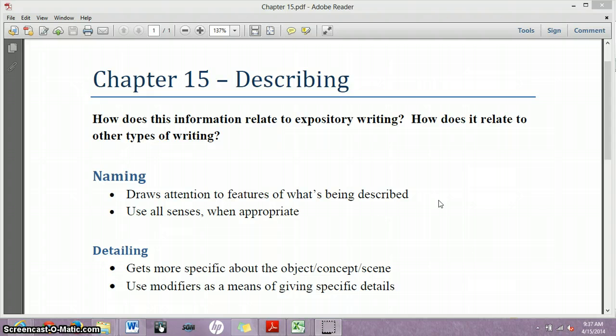So I think the strategies are pretty straightforward. With naming, you are looking at specific observable features that you're trying to describe. You draw attention to those things for some reason. It always goes back to your purpose. And of course, when you do this, you can use senses. So is it something you see? Can you name something that you feel, something you smell, something you hear? You can draw on those senses as it's appropriate, of course.